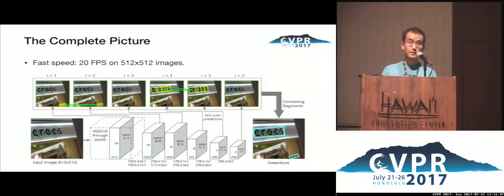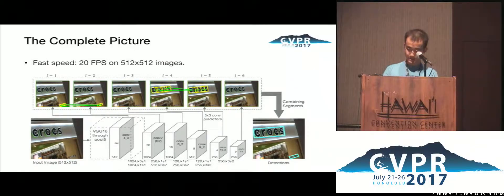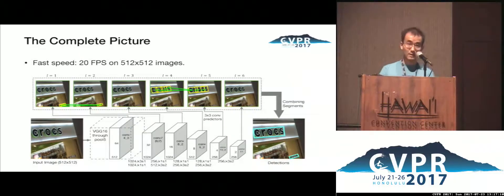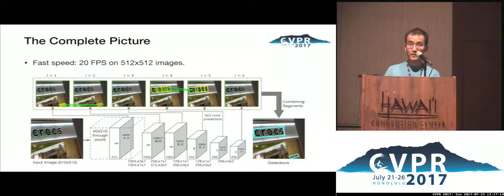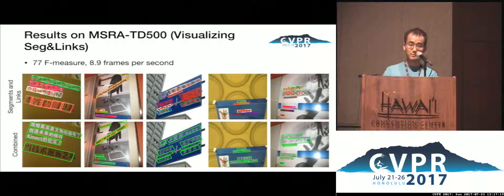Here is the complete picture of our model. The yellow boxes are the segments. The green edges are the links. You can see some links are cross-layer links. Finally, we combine the segments that are connected by links and get the final detection boxes as the outputs. Notice that we don't need any non-maximum suppression in this process. And because of the fully convolutional design, the model is very fast — it runs at about 20 frames per second on 500 by 500 images.